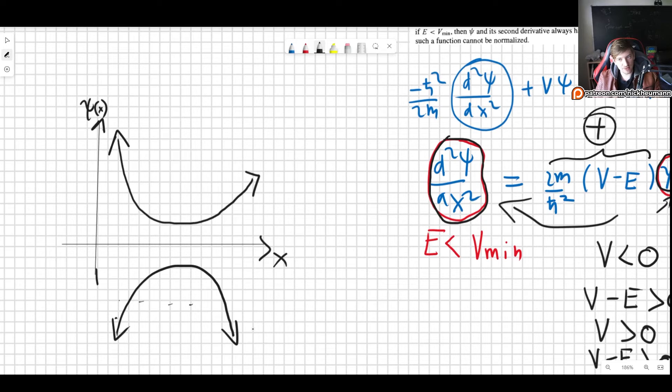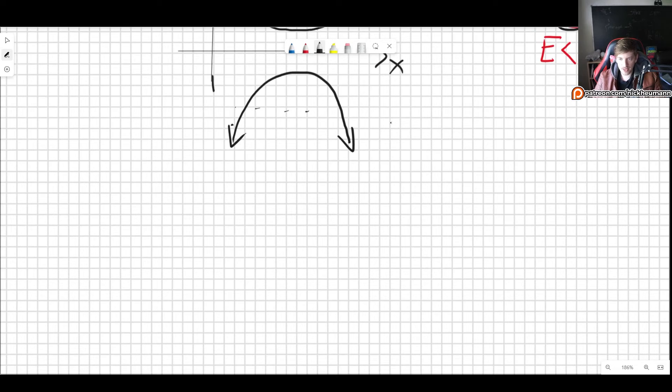And why is that relevant? Because if our wave function is not going to zero, then when we integrate from minus infinity to infinity over our wave function, then this will go to infinity. It will be divergent and it will be non-normalizable.